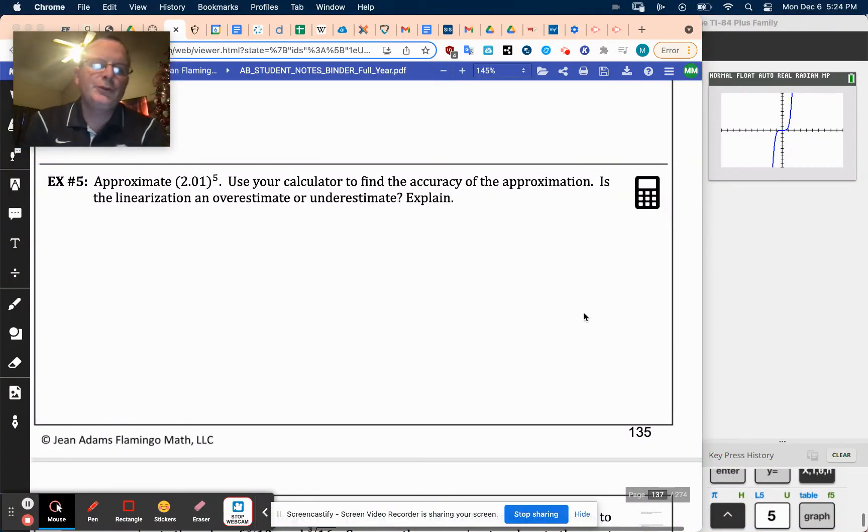Okay, it says approximate 2.1 to the 5th. Use your calculator to find the accuracy of this approximation. Is the linearization an overestimate or underestimate and explain?